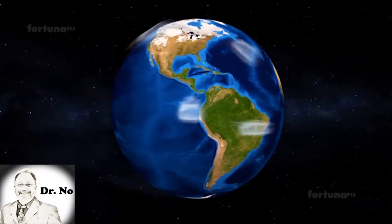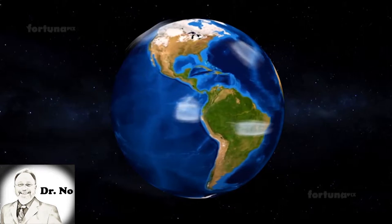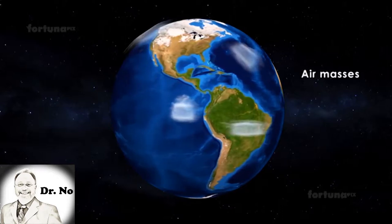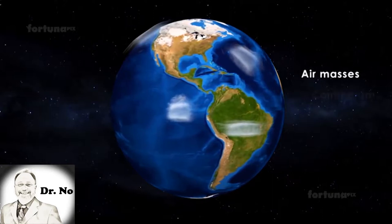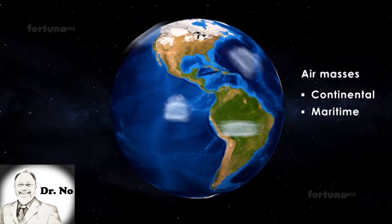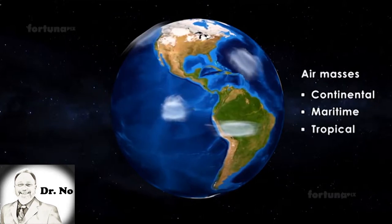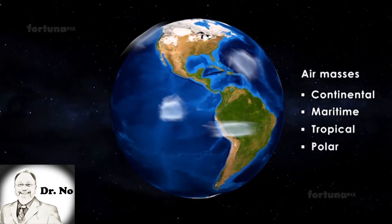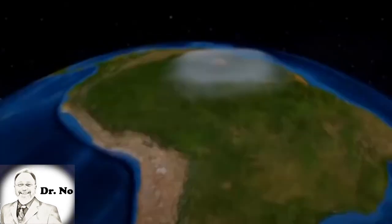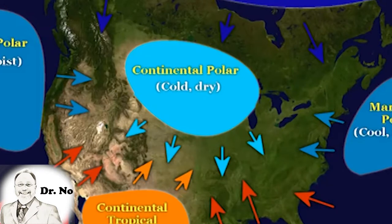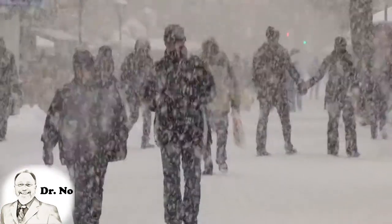From these categories come five combinations of air mass types that influence United States and North American weather. Continental polar air is cold, dry, and stable, forming over the snow-covered interior of Canada and Alaska. The most common example enters the United States in winter, when the jet stream dips southward, carrying cold, dry continental polar air sometimes as far south as Florida. When it comes across the Great Lakes region, continental polar air can trigger lake effect snow, which we will talk about later.